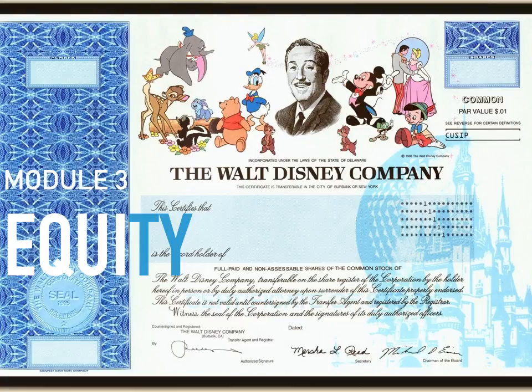This is an image of a stock certificate — the Walt Disney Company stock certificate. You'll notice it has a few features. It lists common stock, which is a type of stock. We'll learn that it could also be preferred stock. It has something called a par value, in this case one cent. It also names the person it's issued to, the record holder. It's signed by the secretary and the chairman of the board, and it includes the stock certificate number, the company seal, and the number of shares the stock certificate represents.